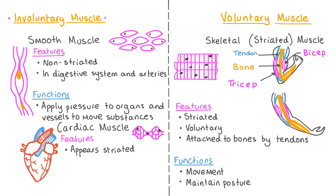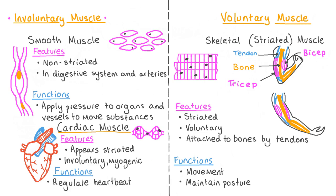Cardiac muscle cells are also involuntary but are only found in the heart. Like skeletal muscle cells, cardiac muscle cells also appear stripey or striated. The cells of cardiac muscle are described as myogenic, which means that the impulse originates from the heart and not externally like with voluntary muscles. This allows our heart to beat continuously and tirelessly in a regular rhythm to pump blood around our body.